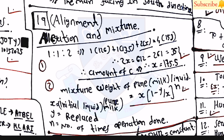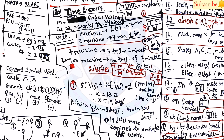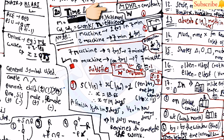Topic 19 covers alligation and mixture. The weight of pure milk or liquid remaining after replacements is found by: x × (1 − y/x)^n, where x = initial liquid or pure milk, y = replaced quantity, and n = number of times the operation is performed. Topic 20 covers time and work using the single equation: M × D × H × η / W = constant, from which any proportional relationship can be derived — M ∝ 1/D, D ∝ 1/η, etc. Here M = men, D = days, H = hours, W = work, η = efficiency.